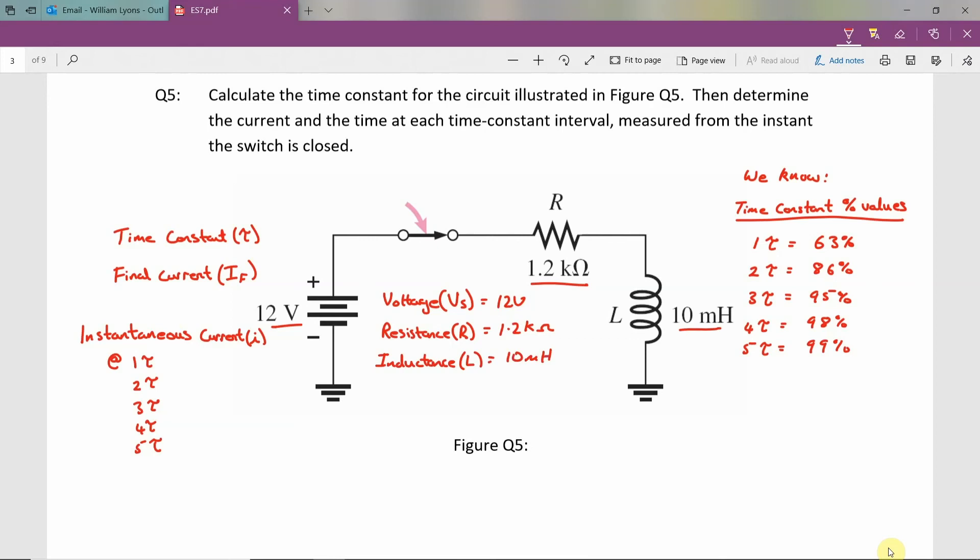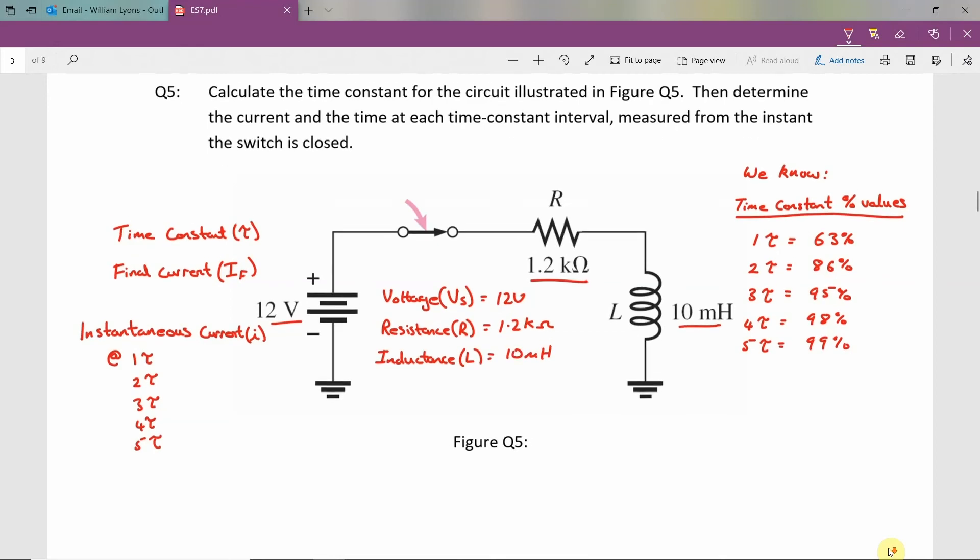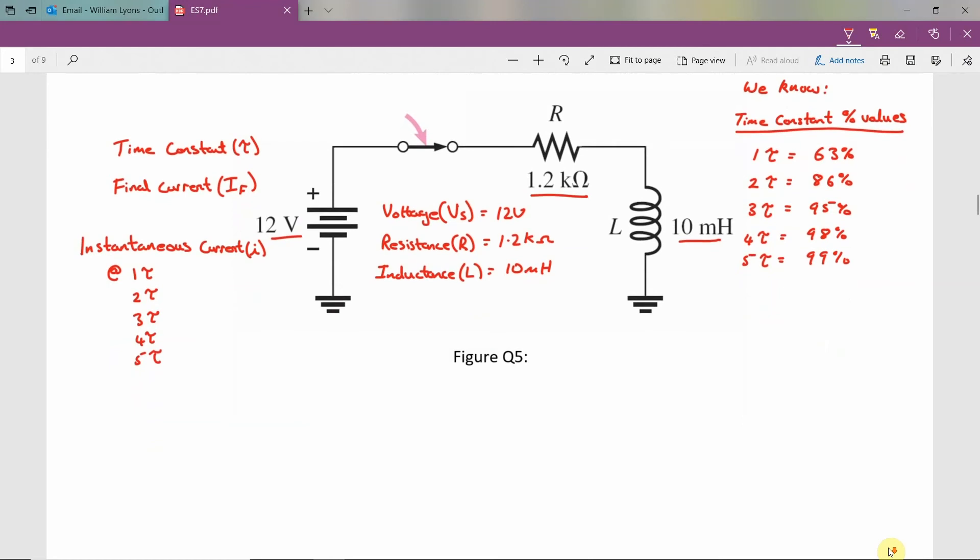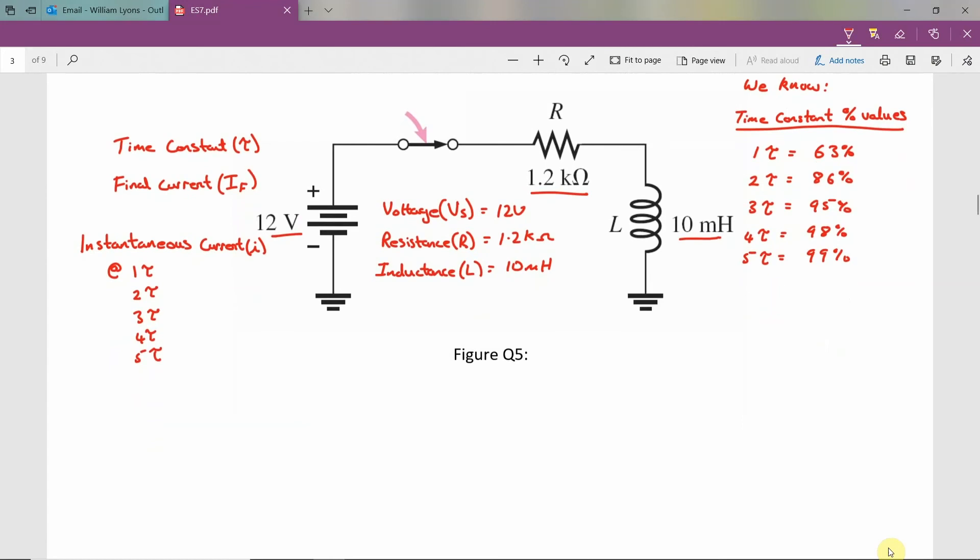Now that we've taken the time constant τ, we can calculate the time constant τ by taking the inductance and dividing by the resistance L divided by R. So in this example, it's 10 millihenries divided by 1.2 kilo ohms, and when you carry out your calculation, you get an answer for τ of 8.3 microseconds.